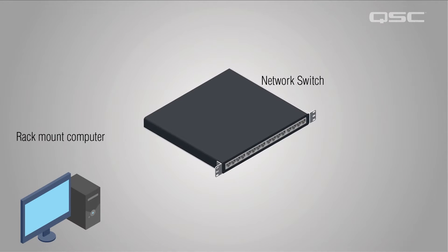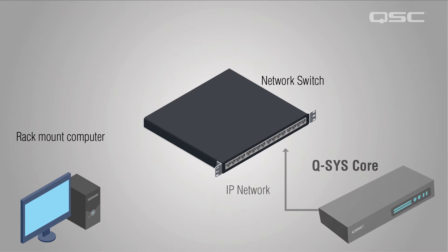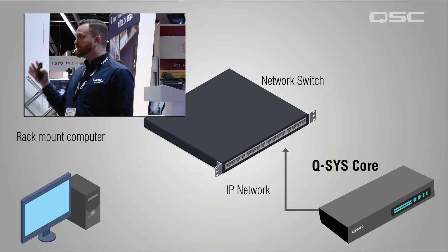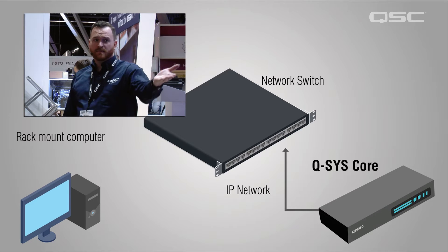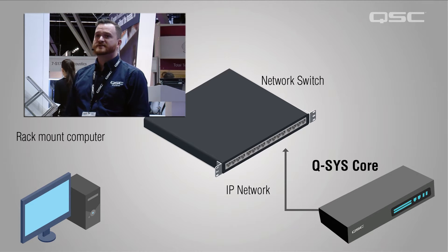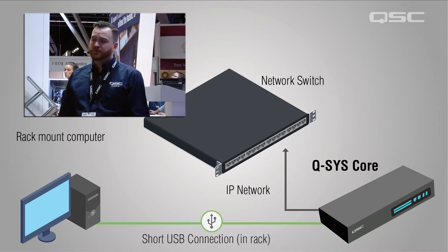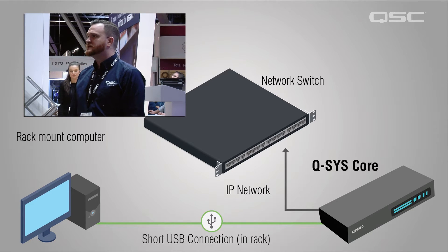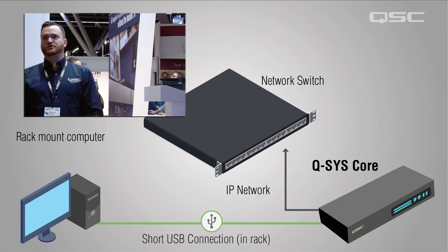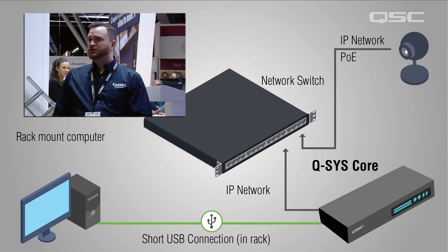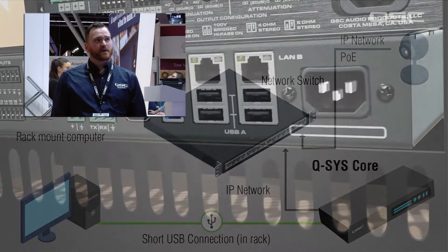But if you start with a network switch at the heart of your installation — which QSC always says, let's start with a network switch — you add a Core to it, whether it's our Core 110F for in-room, enterprise core, or someday a Dell server in a data center. You can connect the Core 110F directly to your computer in the rack. No need to buy an extender, no need to buy a distribution package for your USB. You can start with one camera and add in as many cameras as you want.